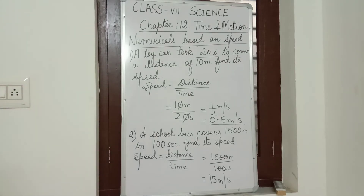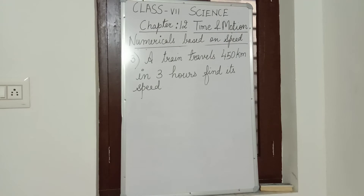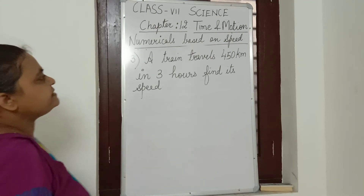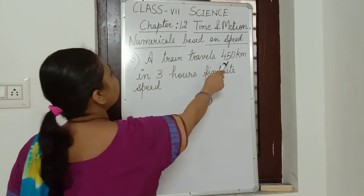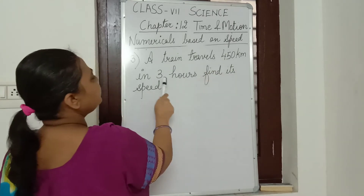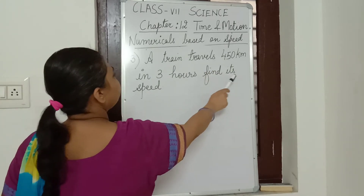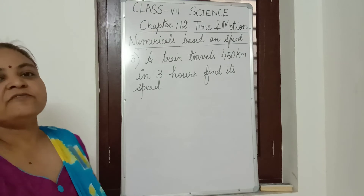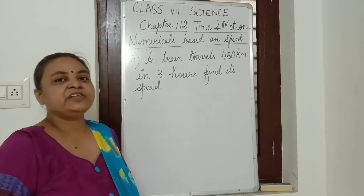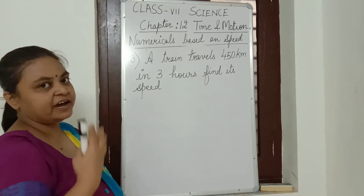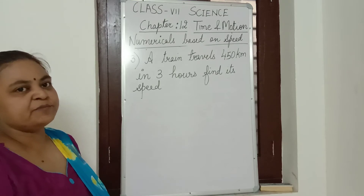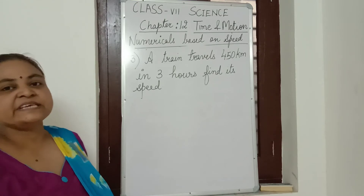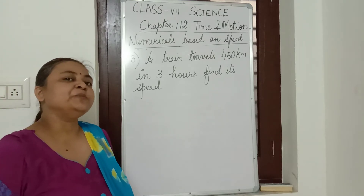Let us go to the next, in which we are going to study how we can calculate speed in kilometer per hour. Our next numerical is: a train travels 450 kilometers in 3 hours. Find its speed. Normally vehicles like cars and trains travel large distances and take more time, so we express speed in kilometer per hour.